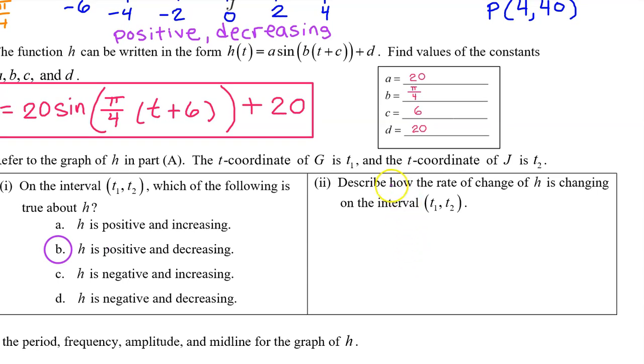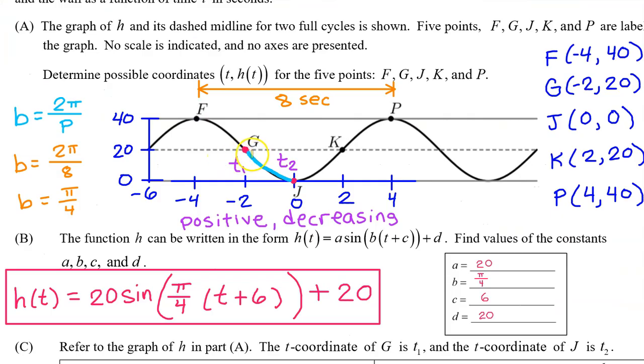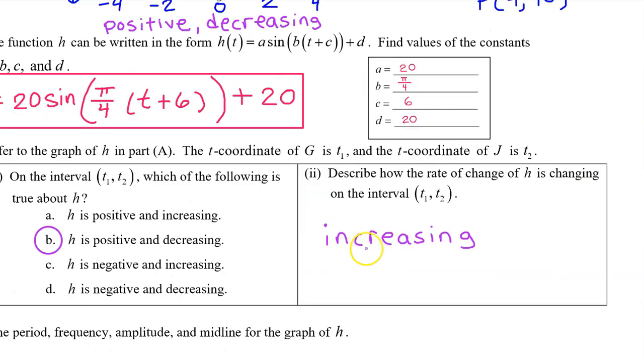C, part 2. Describe how the rate of change of h is changing on the interval from t1 to t2. In unit 1, we learned that wherever h of t is concave up, the rate of change is increasing. And wherever h of t is concave down, the rate of change is decreasing. Since h of t is concave up on this interval, that means the rate of change is increasing. Since they did not ask us to explain our reasoning, it's safest to give a one-word answer. Just say increasing.